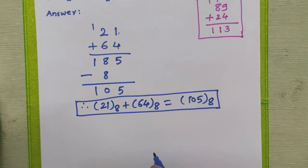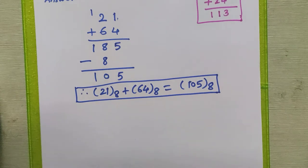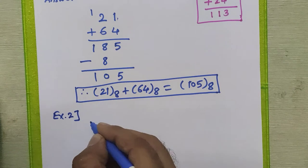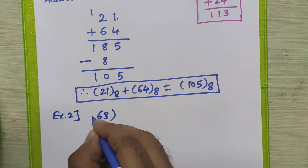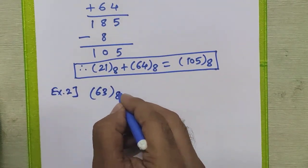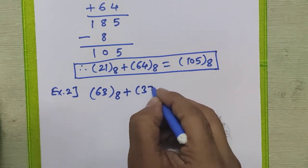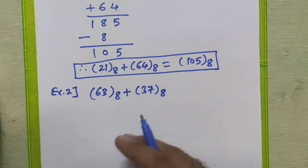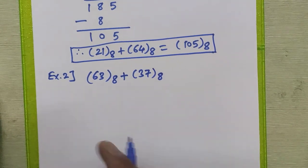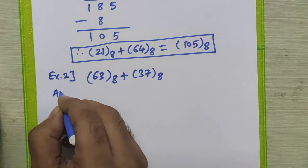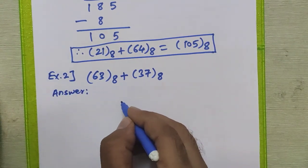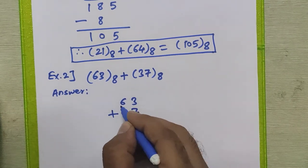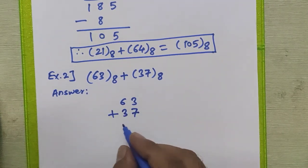Now to understand it very well, we will see one more example and perform the addition of two different octal numbers: 63 in octal plus 37 in octal, without converting to any other base.